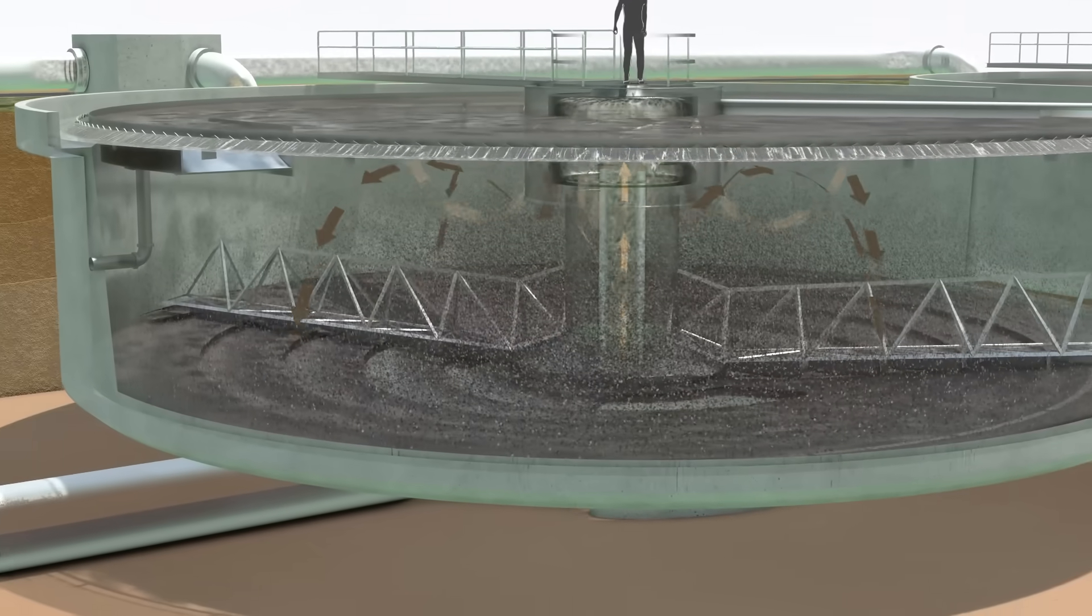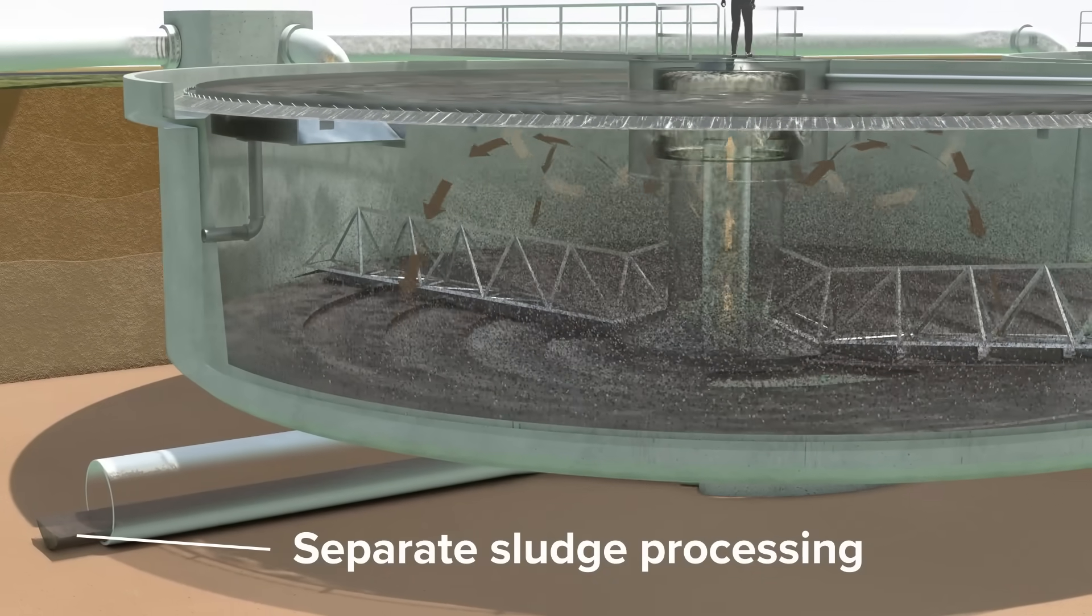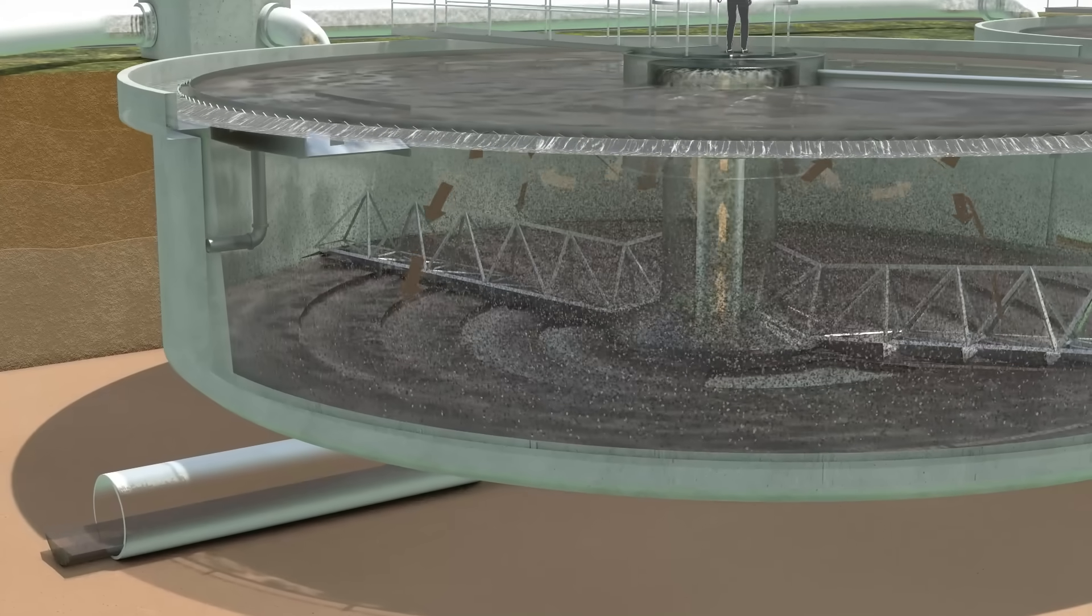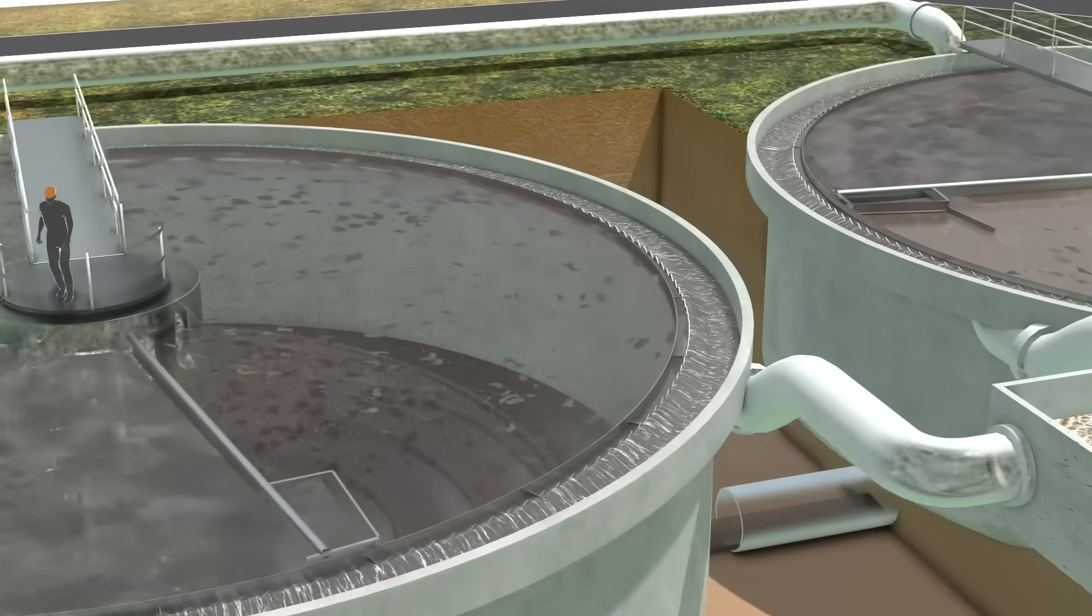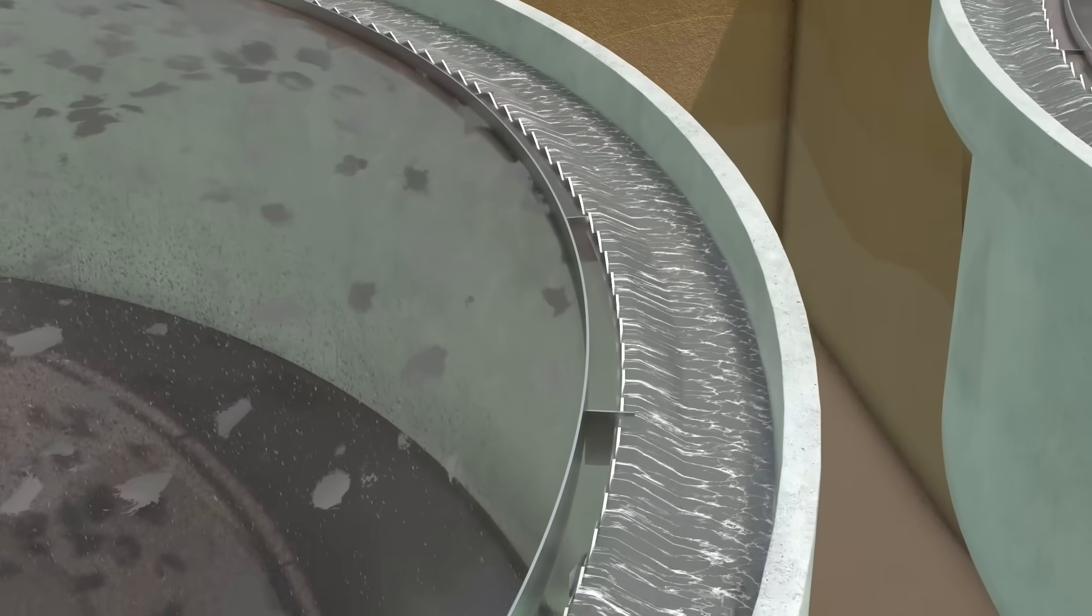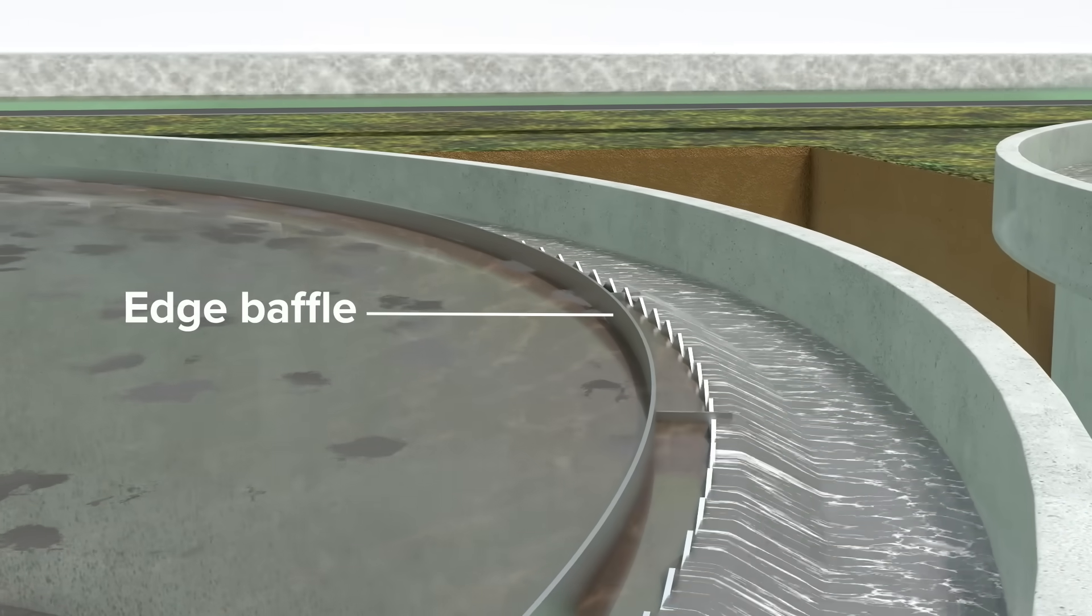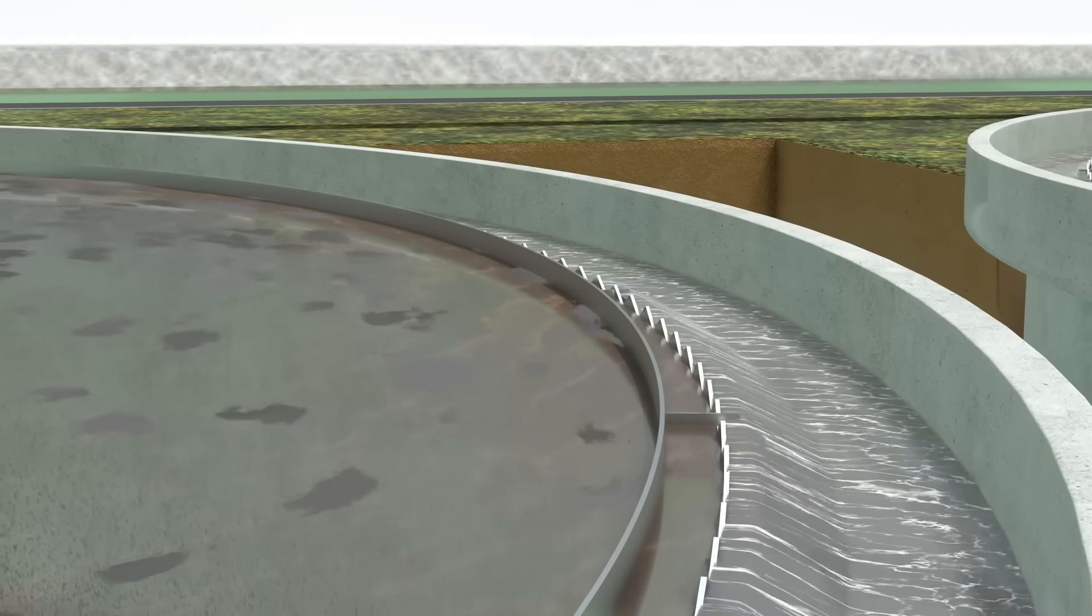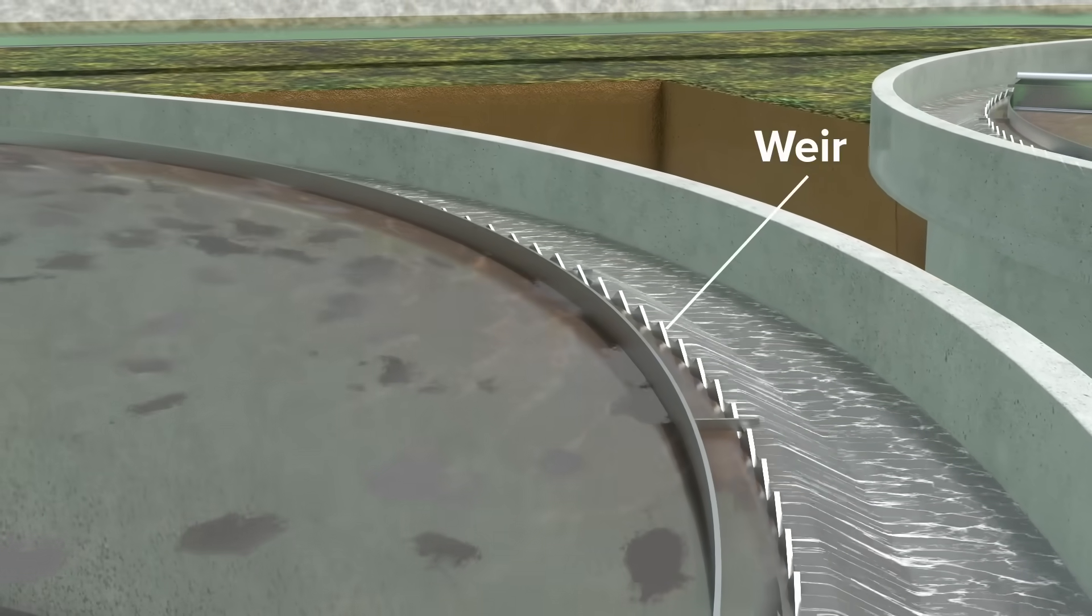This organic matter has its own purification process and can eventually be used, for example, as fertilizer. A baffle at the edge keeps floating material from mixing with outgoing processed water, as it flows over a lip at the edge of the tank called a weir.